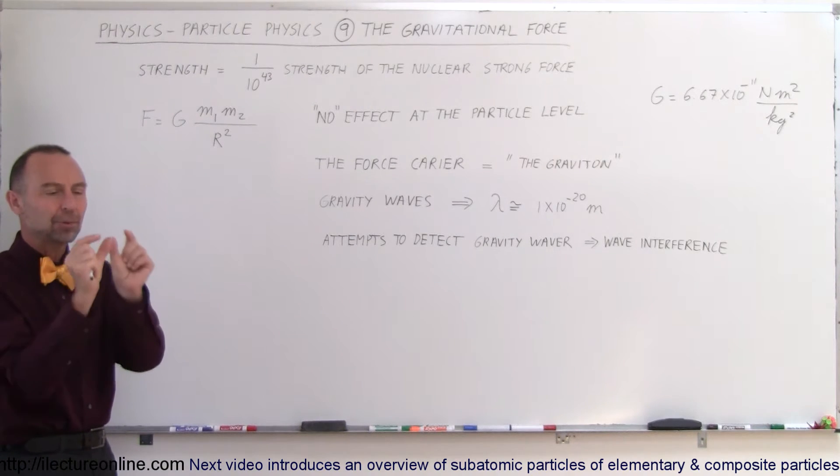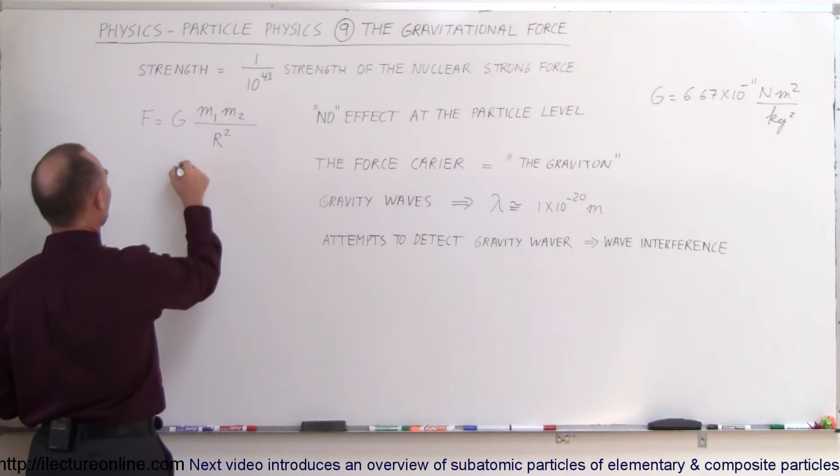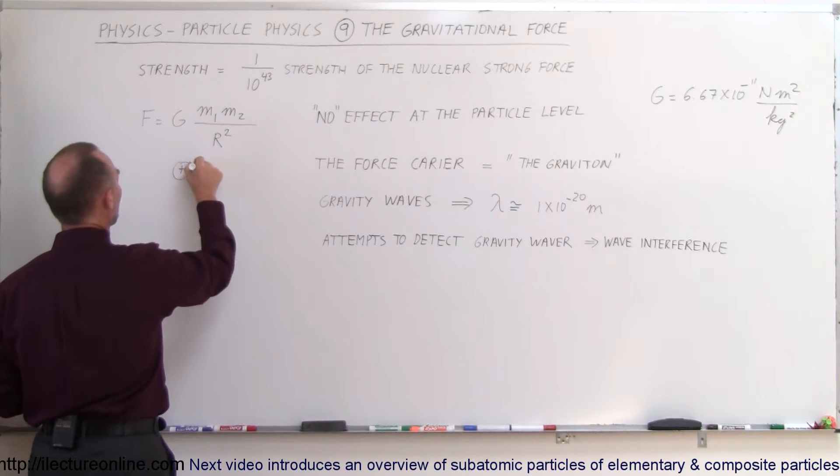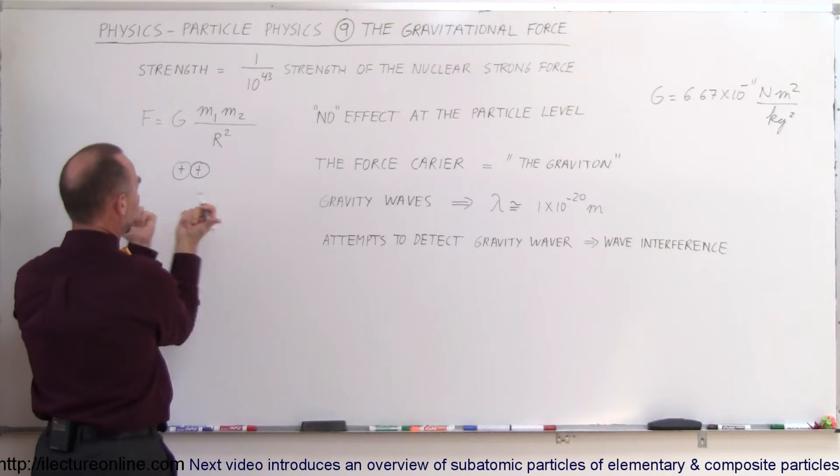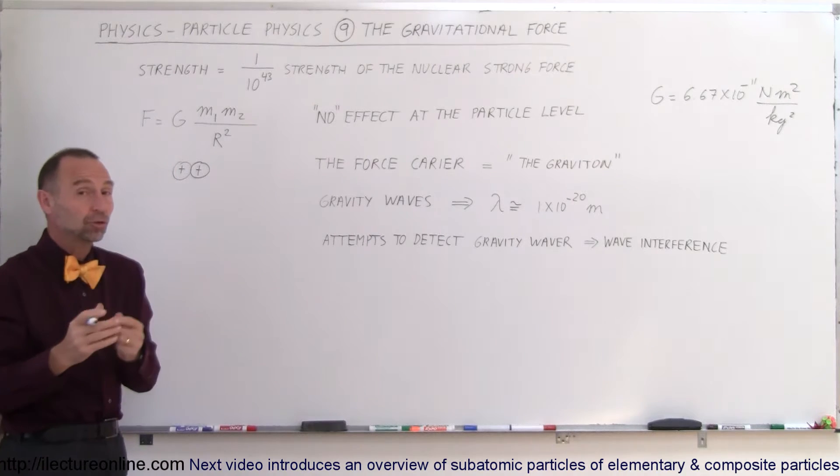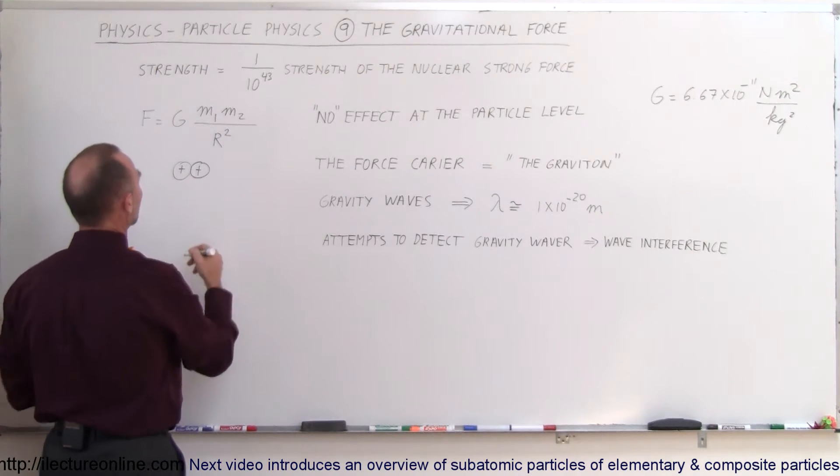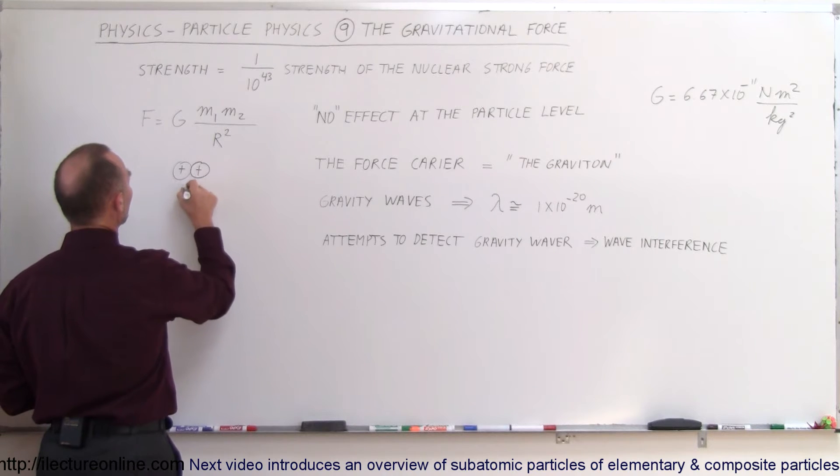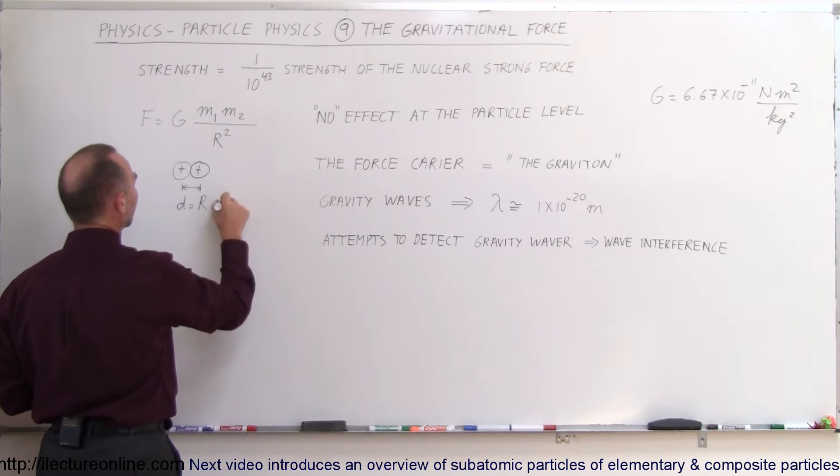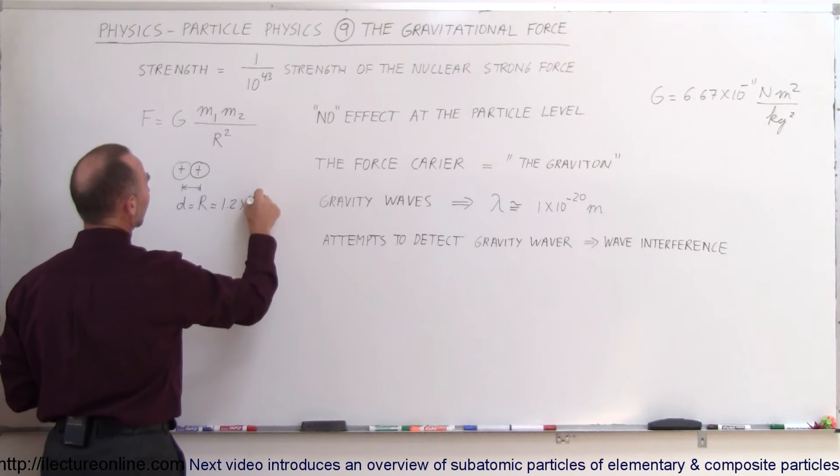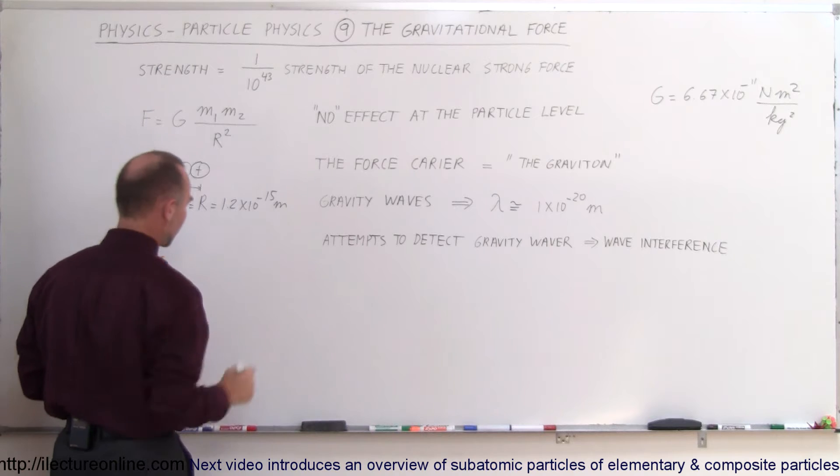So what is the force of gravity between two protons put side by side? Let's say we put a proton here with a proton right next to it. Of course, we already know that the force of repulsion due to the electrical forces is enormous, but what about the force of attraction between them? The distance between the two centers is equal to 1.2 times 10 to the minus 15 meters.